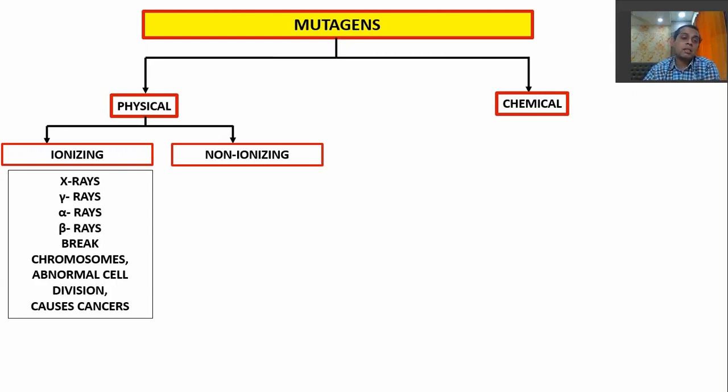The types of ionizing radiations include X-rays, gamma rays, delta rays, and beta rays. All of these can bring about many changes in our DNA.